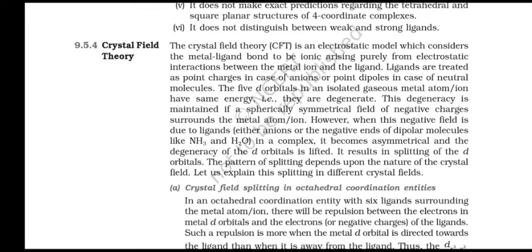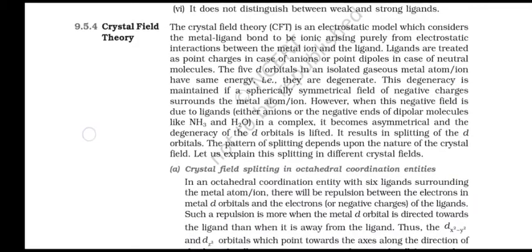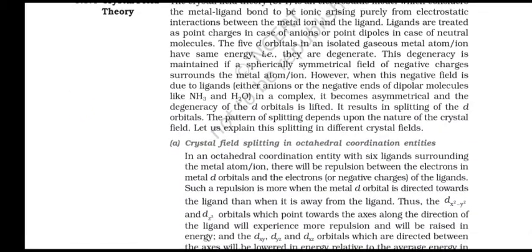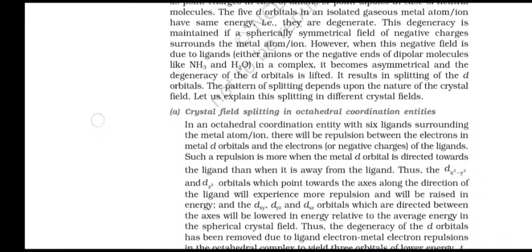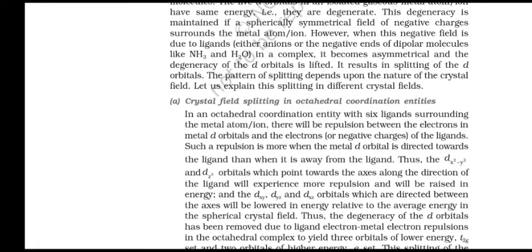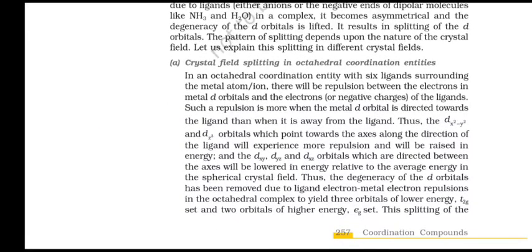Crystal Field Theory (CFT): The CFT is an electrostatic model which considers the metal-ligand bond to be ionic, arising purely from electrostatic interactions between the metal ion and the ligand. Ligands are treated as point charges (in case of anions) or point dipoles (in case of neutral molecules). The five d orbitals of an isolated gaseous metal atom or ion have the same energy — they are degenerate. This degeneracy is maintained in a spherically symmetrical field of negative charges. However, the field due to ligands in a complex is asymmetrical, so the degeneracy of the d orbitals is lifted — this is the splitting of d orbitals.